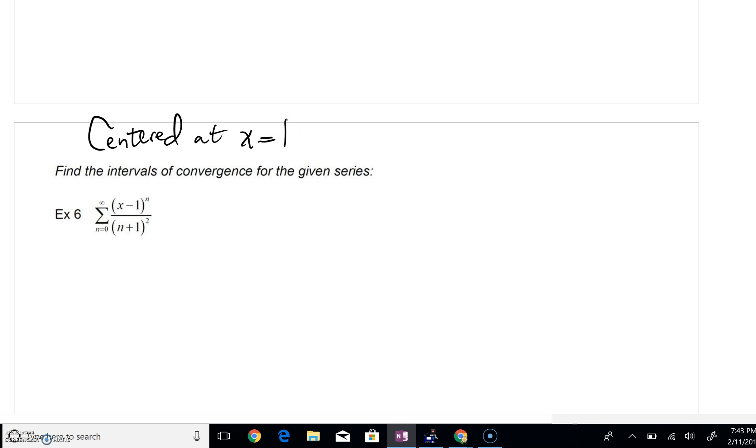So we know, bare minimum, we will converge at x equals one. We might converge everywhere, or we might converge just on an interval. So just to help you out, we're going to do this ratio test. We're going to say the limit as n goes to infinity.